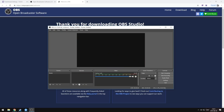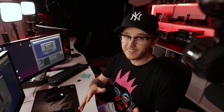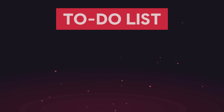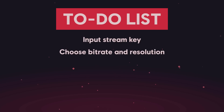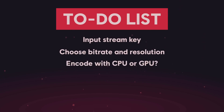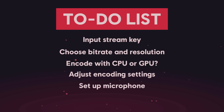OBS can get pretty complicated at times, but if this is your first time using the software, don't worry — all we're going to do today is go over the need-to-know information to get your stream up and running. The first time you open OBS after installing, you'll get prompted to use the auto configuration wizard, but you can always find it later in the tools menu. Today we're going to cover: how to put in your stream key, choose your bitrate and resolution, decide whether to use the CPU or GPU to encode, adjust encoding settings, pick our audio devices and have OBS recognize our microphone, and start adding things for OBS to display.